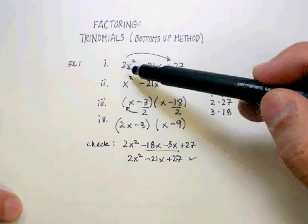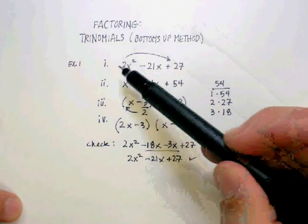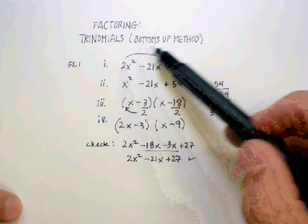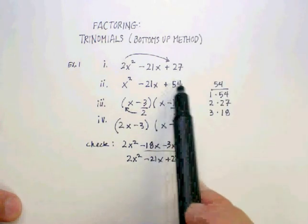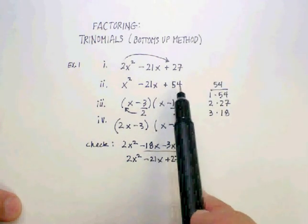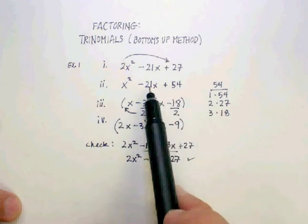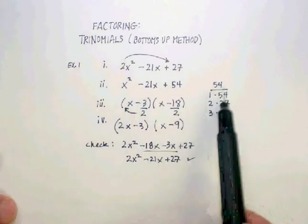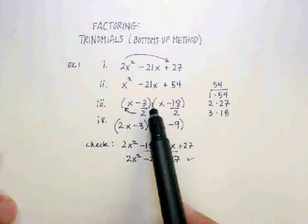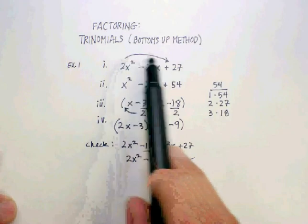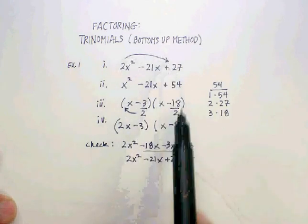So let's just go through those steps one more time. You do the bottoms-up method when your trinomial has a leading coefficient other than one. You take that coefficient, you multiply it by the constant, then you ask yourself what times what gives you 54 but adds up to the middle term. You can do pair factoring until you reach some numbers that work.